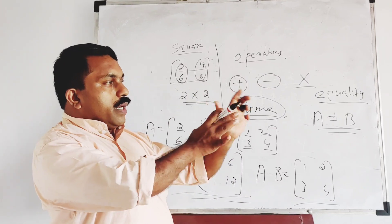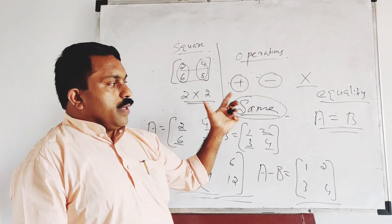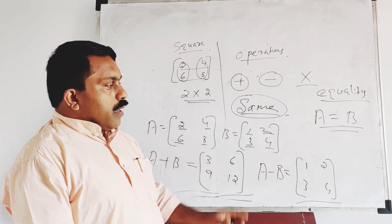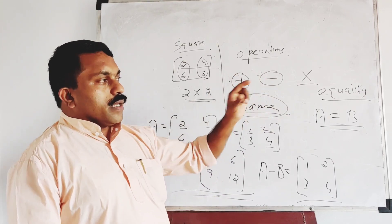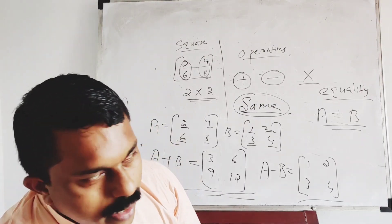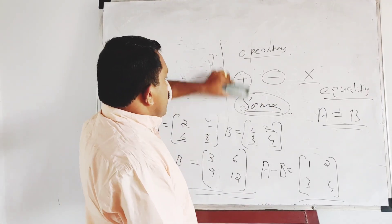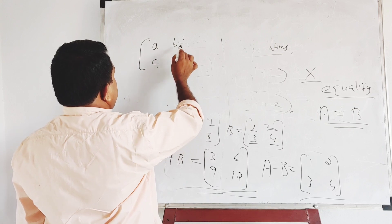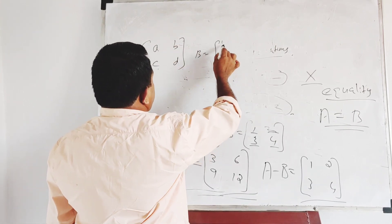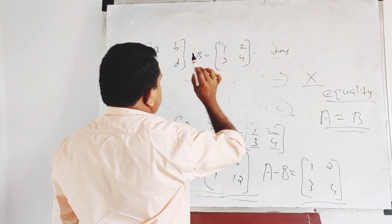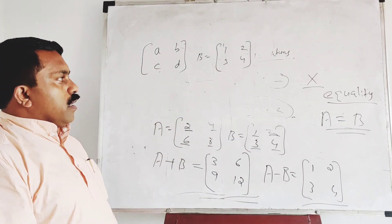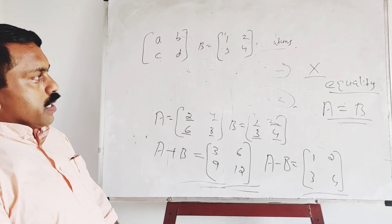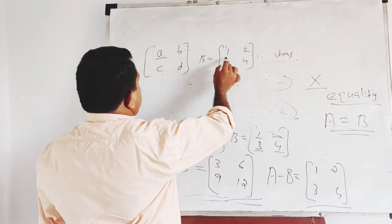A is equal to corresponding element of B. Every element of A is equal to corresponding element of B. For example, A is the matrix A, B, C, D. B is the matrix 1, 2, 3, 4. A is equal to B means every element of A is equal to the corresponding element of B.